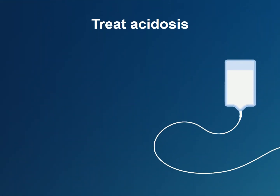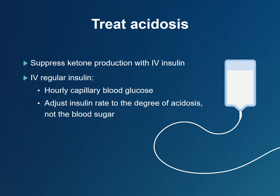Treat acidosis: give intravenous insulin to suppress ketoacid production. Use regular human insulin mixed in normal saline or D5W solution. Check capillary blood sugar hourly and adjust the rate of intravenous insulin as the acidosis improves. Follow the anion gap as a marker of acidosis. At this point in the patient's clinical course, we are using insulin to normalize the anion gap.